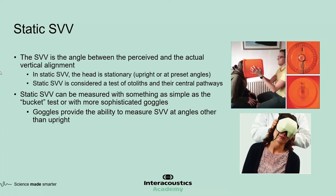Let's move on to another test of the otolith function: SVV. The SVV characterizes the angle between the perceived and the actual vertical alignment of the head. In the static version of SVV, the head is stationary, meaning upright or at preset angles.